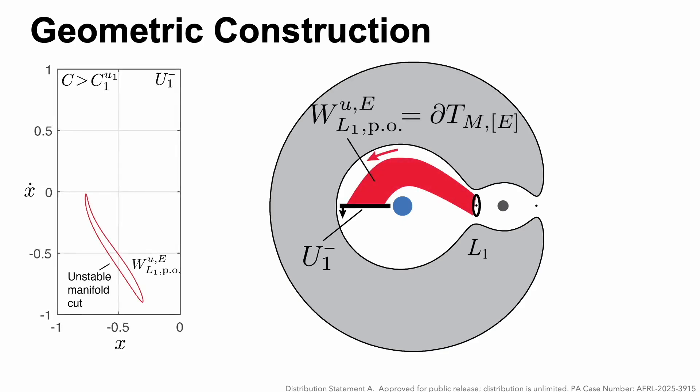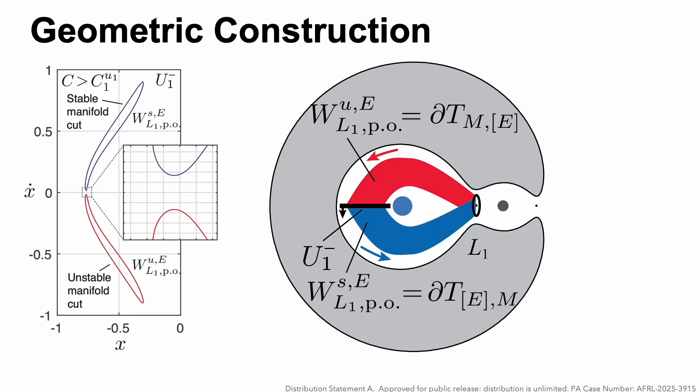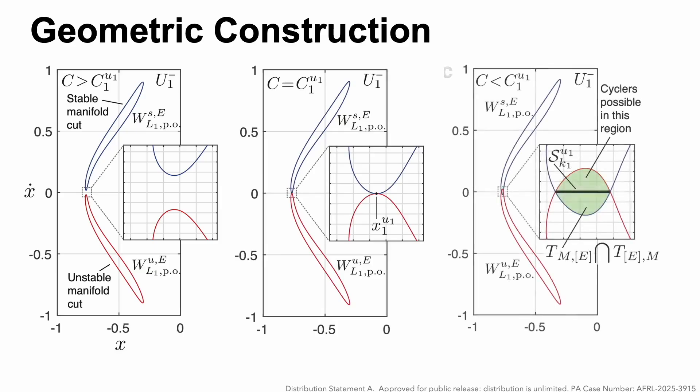We're looking at the Poincaré section U1-, shown on the left, for a Jacobi constant above a critical value. We've now shown the unstable manifold cut. Anything inside that skinny region on the lower left is a trajectory that's currently in the Earth realm that came from the Moon realm. We'll also show the stable manifold cut. Notice they don't intersect, but as we get to that critical value of the Jacobi constant, they do intersect tangentially. And if we go beyond that, or below that critical value, in the green intersection region, this is where cyclers are possible. But we're going to limit ourselves to symmetric cyclers, which are that thick black line.